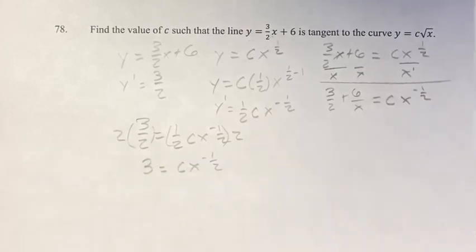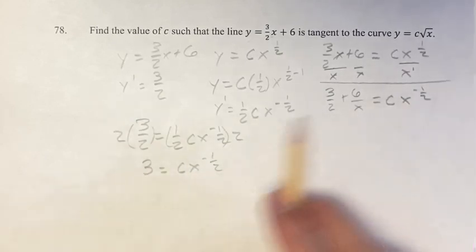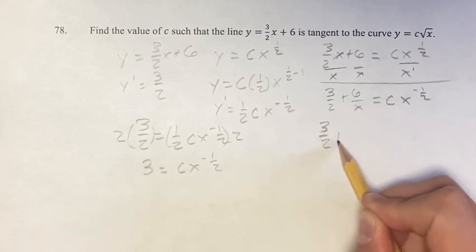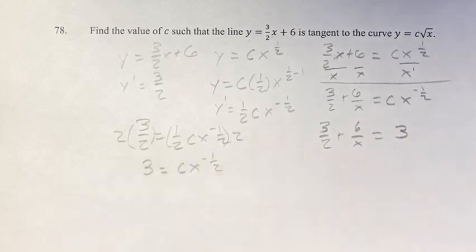And now you can see why I've been doing what I've been doing. I've been manipulating these equations so that we have cx to the negative 1 half in both of these. We can set them equal to each other. So 3 halves plus 6 over x equals 3.